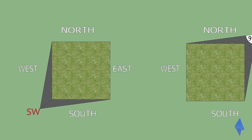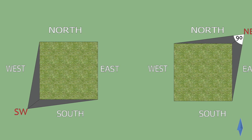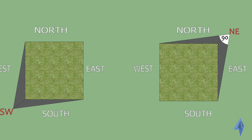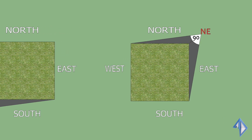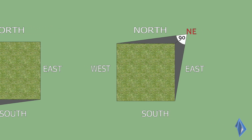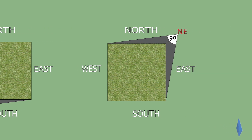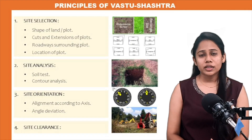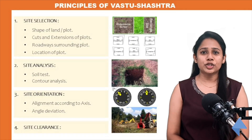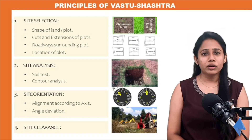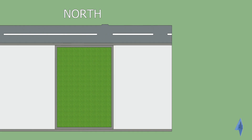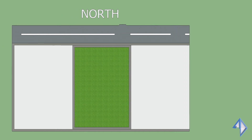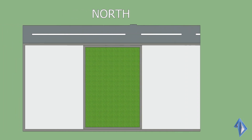But if you have an extension in the north direction or corner and the angle of extension is below 90 degrees, you can purchase that land. There are certain kinds of roadways that should be avoided or recommended. If you have a roadway on the north direction of your plot,